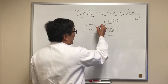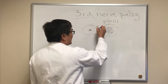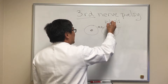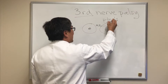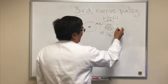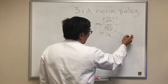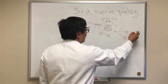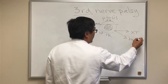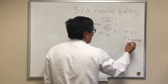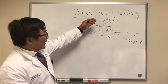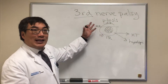Because the third nerve is in charge of several muscles — the medial rectus, the inferior rectus, the superior rectus, and the inferior oblique — the eye will be down and out, meaning exotropic and hypotropic. So we're going to have an eye that is down and out, the lid will be down, and the pupil will be dilated.